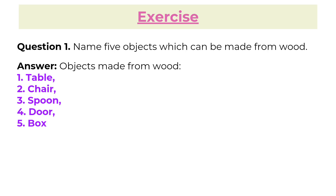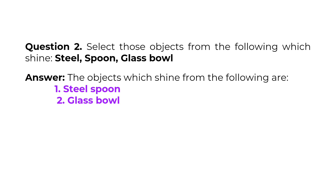Exercise. Question 1: Name 5 objects which can be made from wood. Answer: Objects made from wood — 1. Table, 2. Chair, 3. Spoon, 4. Door, 5. Box. Question 2: Select those objects from the following which shine: steel spoon, glass bowl. Answer: The objects which shine are 1. Steel spoon and 2. Glass bowl.